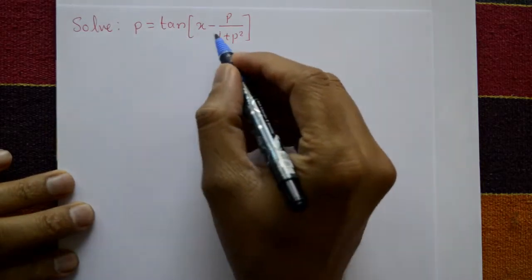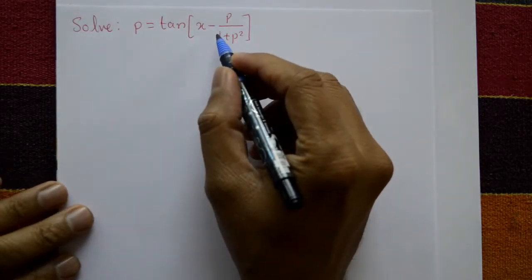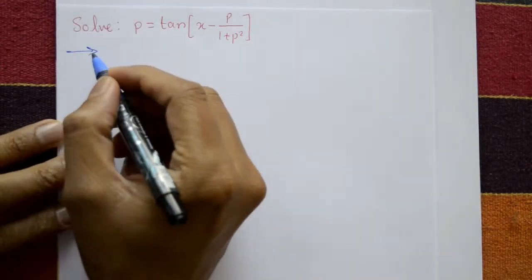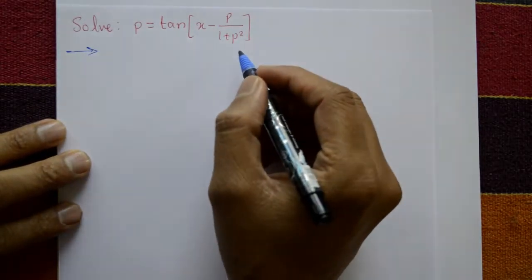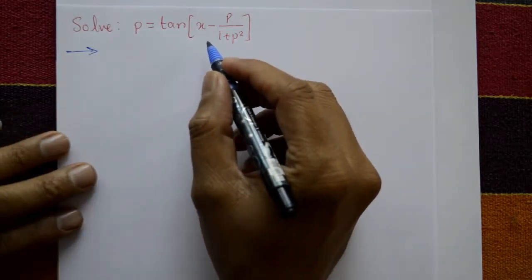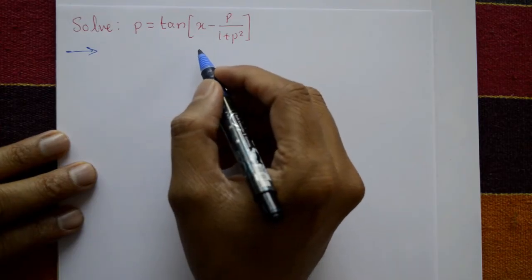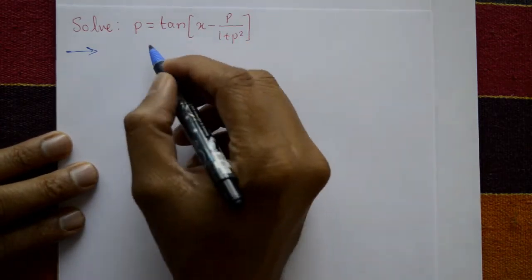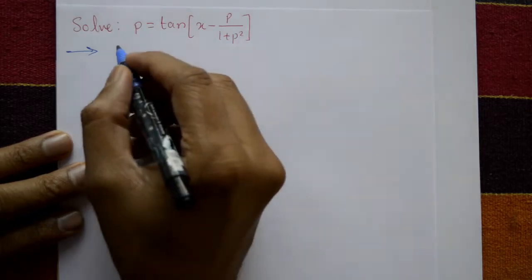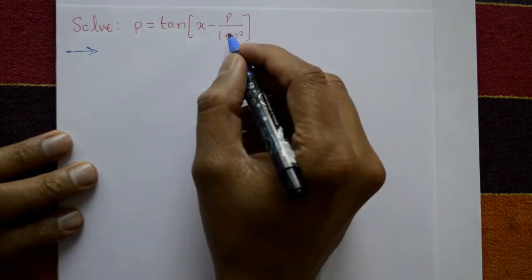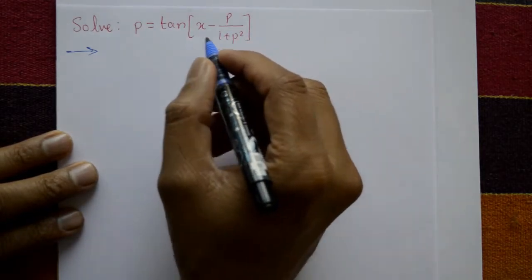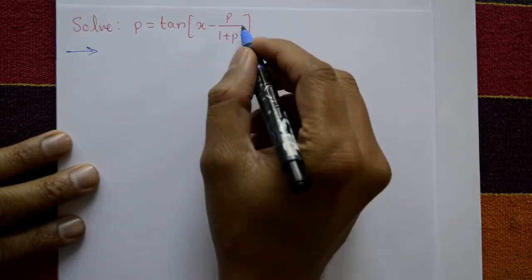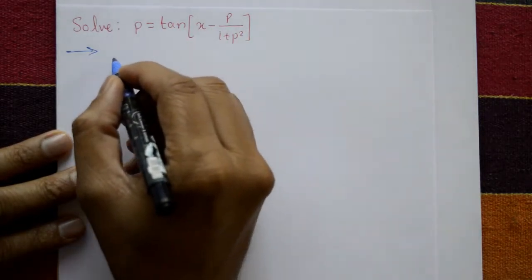Solve p = tan(x - p) / (1 + p²). Check first: this given expression — is it possible to solve for p, or for x? There is no y variable, so it is not possible to solve for p. It is only solvable for x.